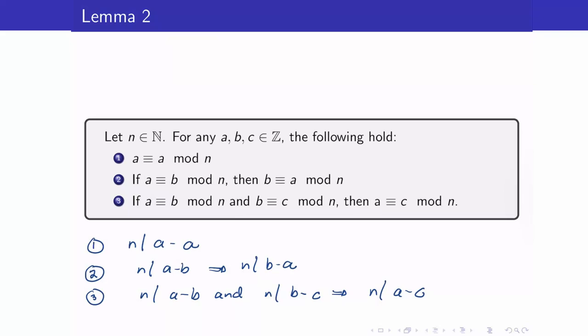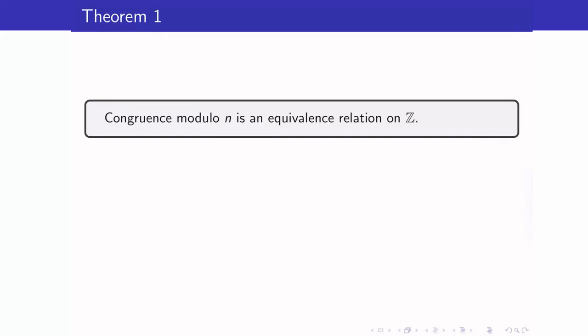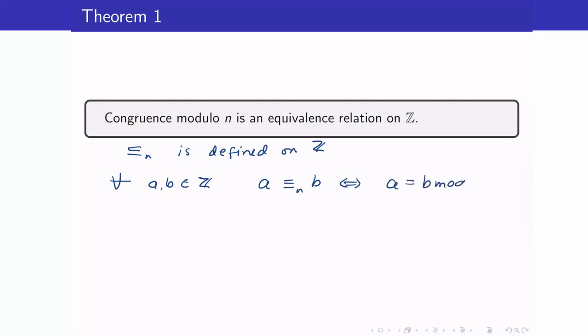In your proof, these are the only things you have to show. Our first theorem states that congruence modulo n is an equivalence relation on Z. Mathematically, if we define a relation on Z, for all a, b in Z, we say that a is related to b if and only if a is congruent to b mod n. This is the equivalence relation — congruence modulo n.